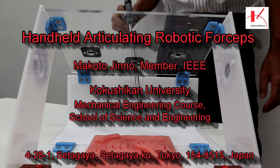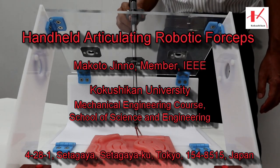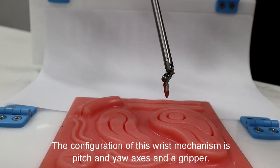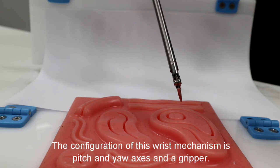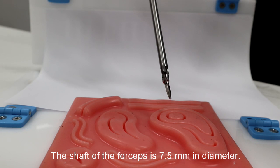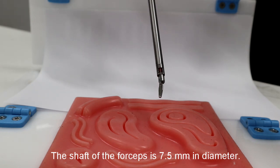This video presents a handheld articulating robotic forceps with a simple non-interference mechanism. The configuration of this wrist mechanism is pitch and yaw axis and a gripper. The shaft of the forceps is 7.5 mm in diameter.